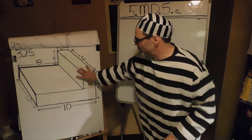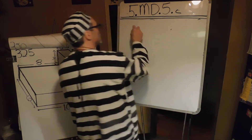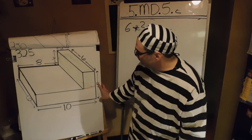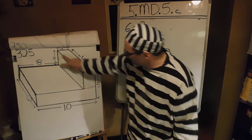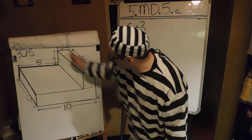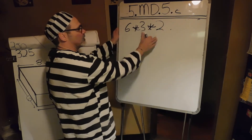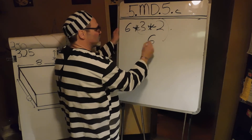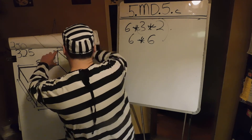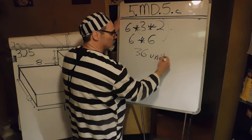Now we're just looking at the green. It's six deep, three high, and two wide. So six multiplied by three — wait, two wide, sorry. Three times two is six. Three by six by two. Six times six is 36 units cubed.